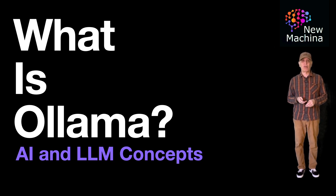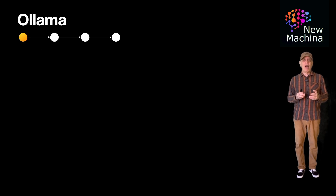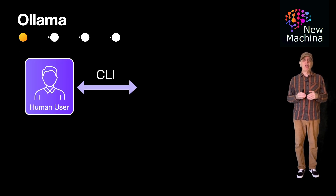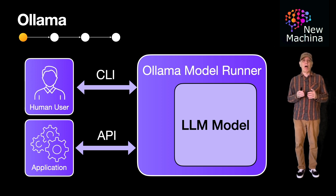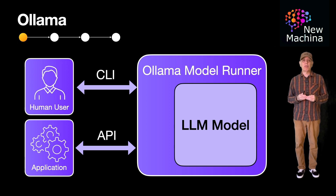Let's get started. Ollama is a locally deployed AI model runner that lets you download and run large language models on your machine without relying on LLMs hosted in the cloud.